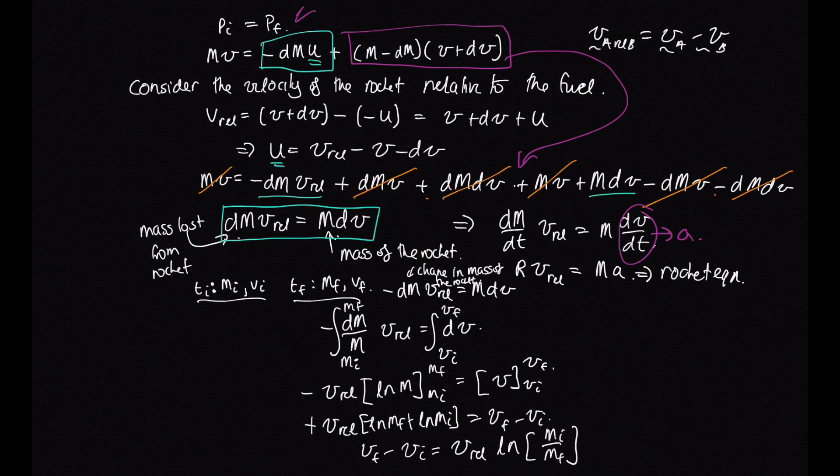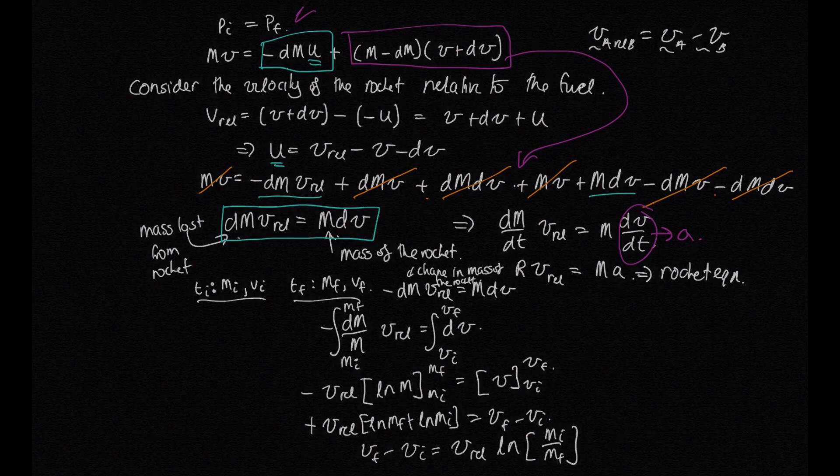So we've got v final minus v initial is equal to v_rel times log m initial over m final. And so that'll tell us by how much our rocket has sped up.